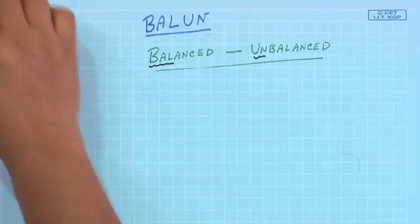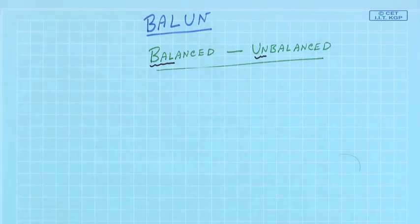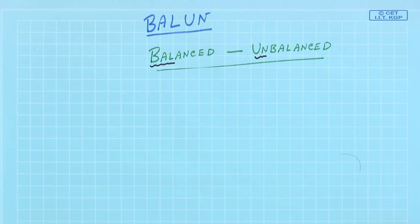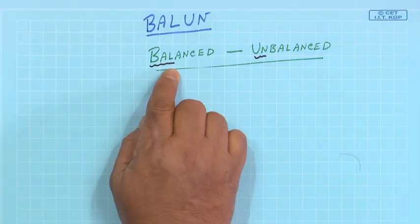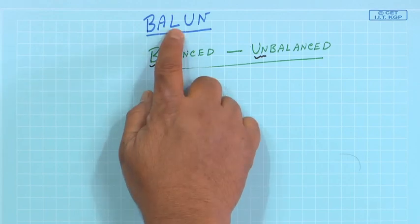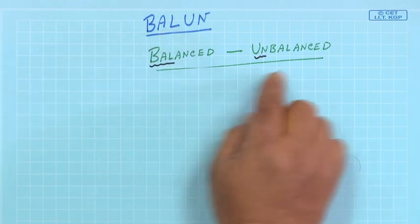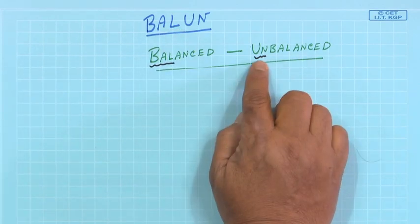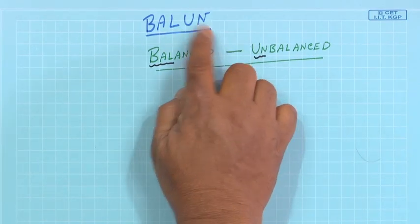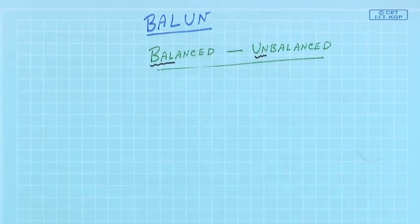Welcome to this lecture. Today we will see BALUN — it is balanced to unbalanced. The acronym is formed by taking BAL from 'balanced' and UN from 'unbalanced', which together give BALUN.